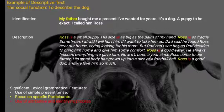We can see this in the example of descriptive text. The significant lexical and grammatical features used in descriptive text are: first, use of simple present tense; second, focus on specific participants — highlighted in yellow; and last, use of attributive and identifying processes — highlighted in red.